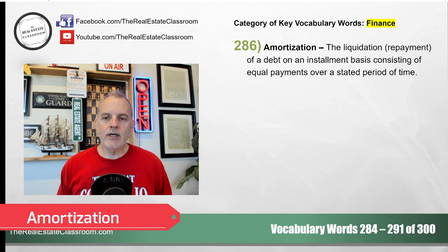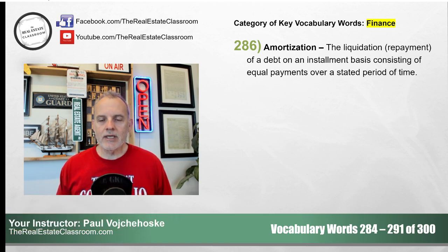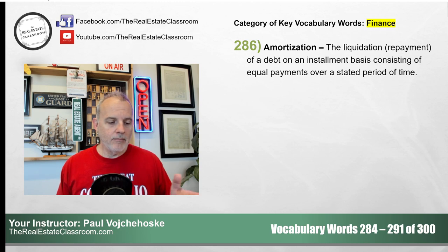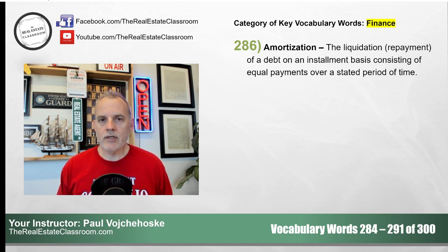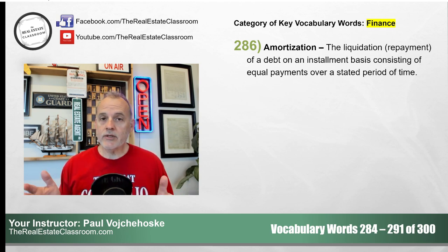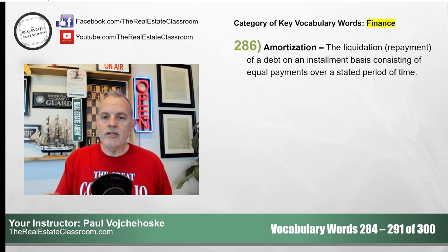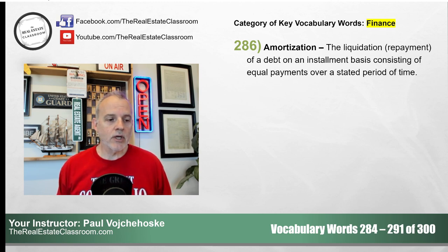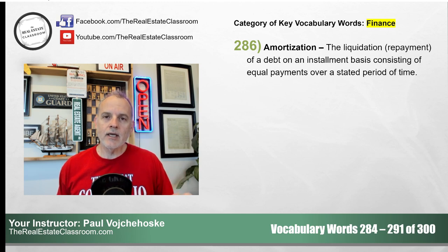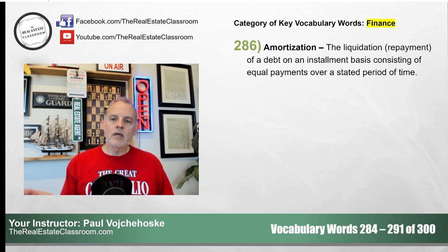Amortization is another key term you have to know. Amortization is a process of liquidation or repayment of a debt owed — let's say to the bank — in installment payments over a period of time. So when you borrow money to purchase a vehicle or a home, there is a term and a monthly payment. For example, a 30-year mortgage means every month for the next 30 years you pay $1,000 a month. Or you borrow money for a car on a 5-year term and pay a set amount monthly until it's paid off. That's all amortization is.